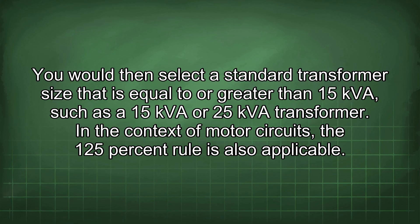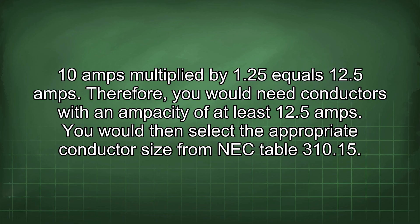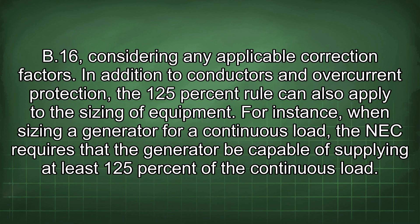In the context of motor circuits, the 125% rule is also applicable. When sizing conductors for a motor circuit, the NEC requires that the conductors have an ampacity of at least 125% of the motor's full load current rating. If a motor has a full load current rating of 10 amps, multiply 10 amps by 1.25: 10 × 1.25 = 12.5 amps. Therefore, you would need conductors with an ampacity of at least 12.5 amps, selected from NEC table 310.15(B)(16) considering any applicable correction factors.